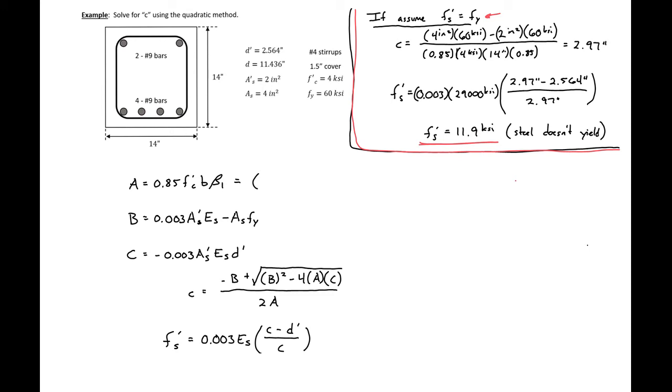So a we have 0.85 times f prime c which is 4 ksi times our b which is 14 inches times our beta 1 is 0.85 for our 4 ksi concrete. And this will give us a value of 40.46.